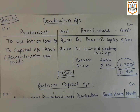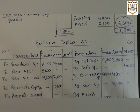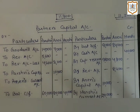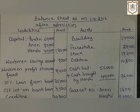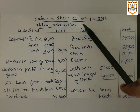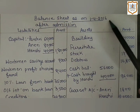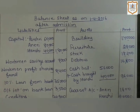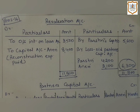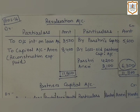Here we will prepare the Revaluation Account, then the Partners' Capital Account, and then the Balance Sheet as on 1st April 2016 after admission. In the first point, the new profit and loss sharing ratio is given as 3:4:2. In the second point, it is given that Hansi brings 40,000 rupees as capital.